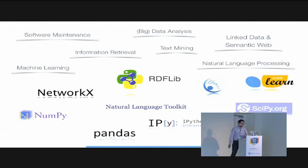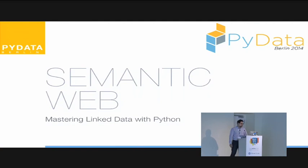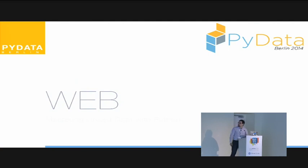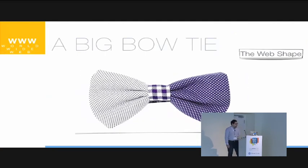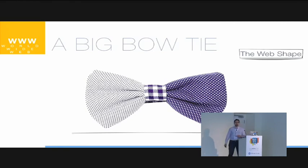I want to give you a brief presentation of the main features of this great package. The talk is 'Semantic Web: Mastering Linked Data with Python.' The first thing I would like to talk about is the web. Researchers in information retrieval or web analysis have estimated that the shape of the web is like a bow tie.